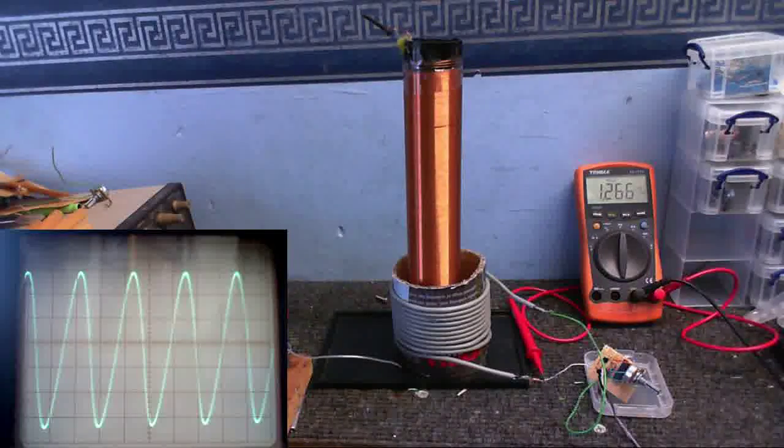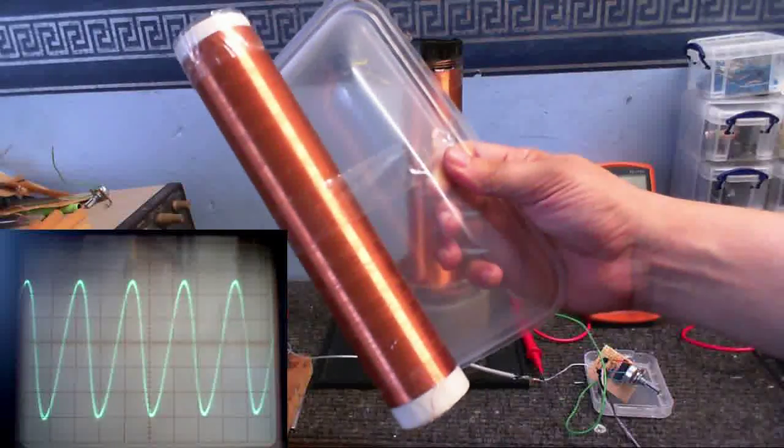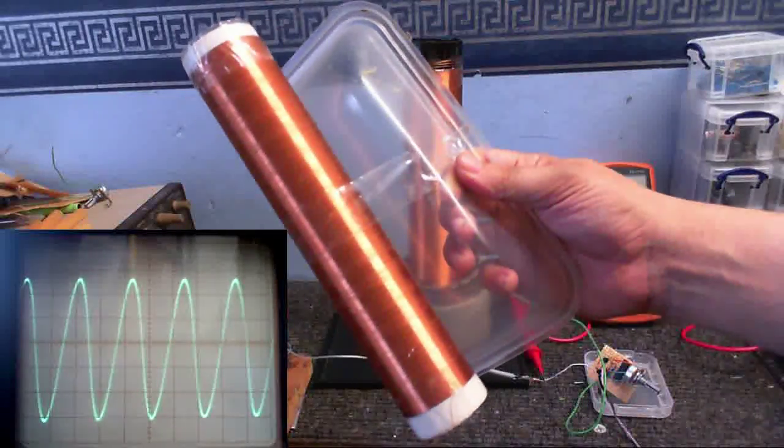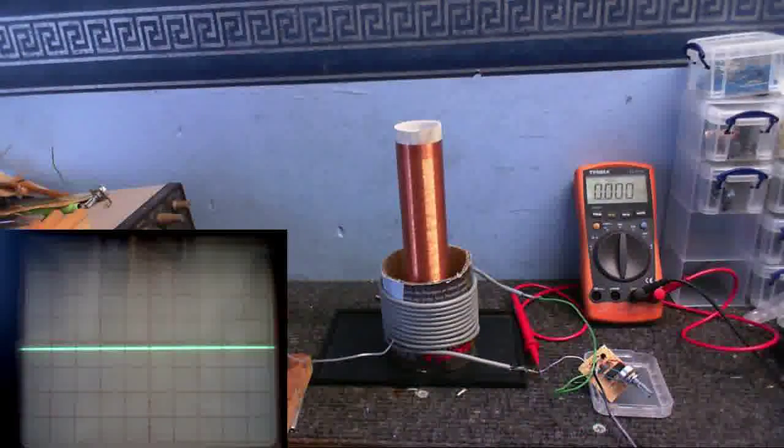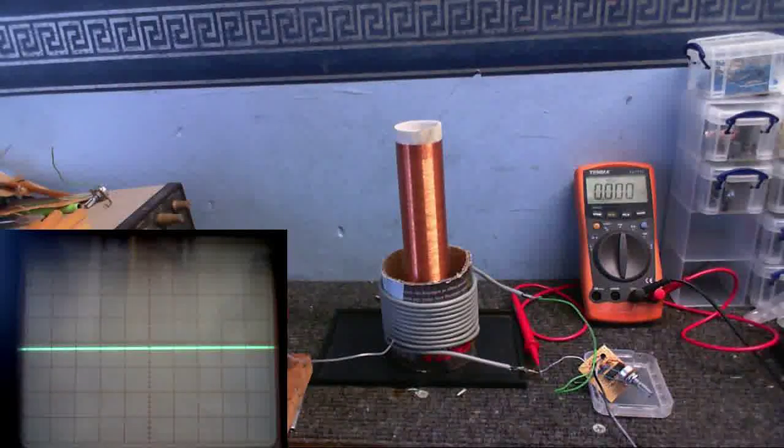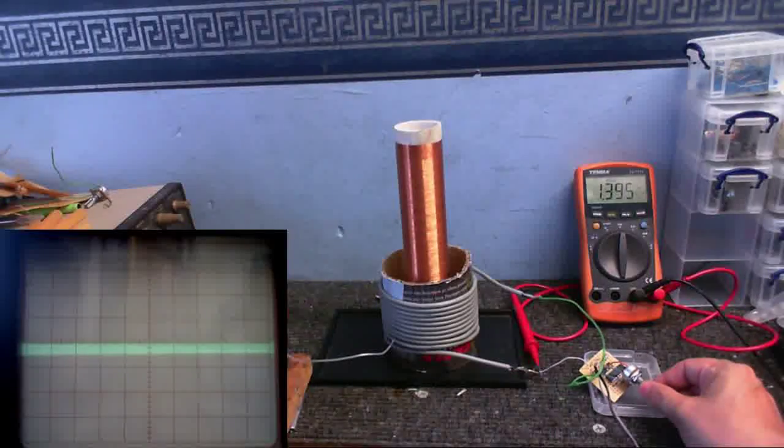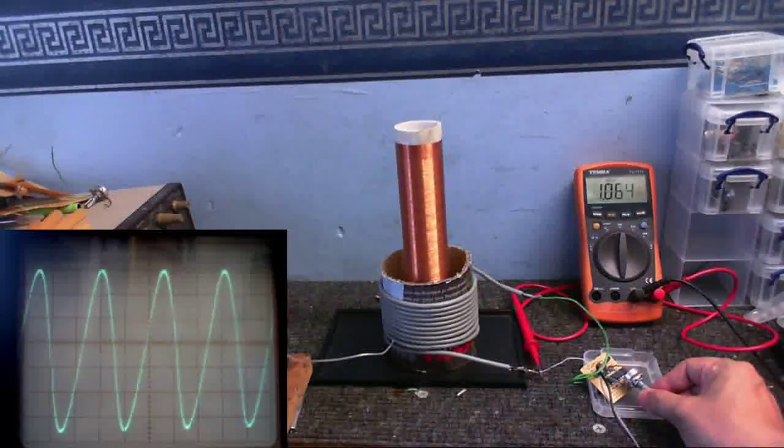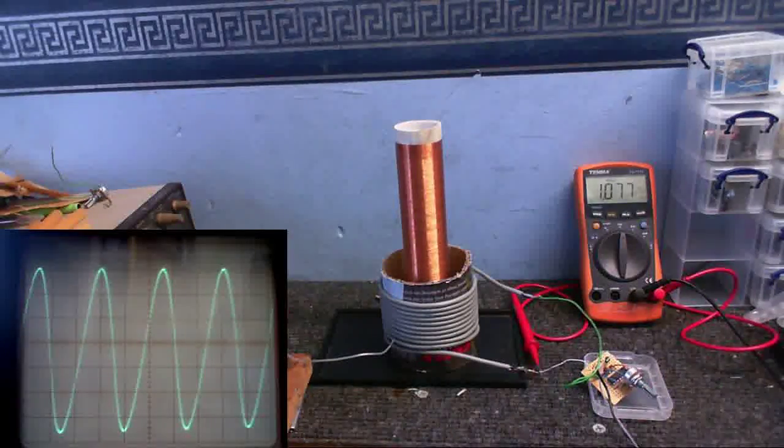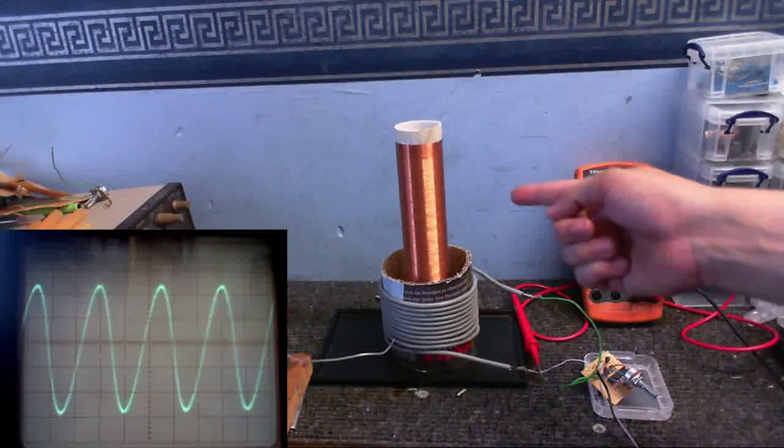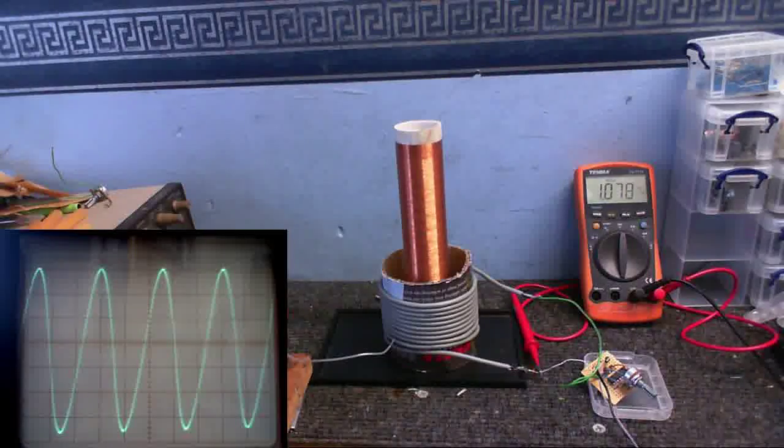So now we're going to test what I call the reservoir coil from the vacuum tube Tesla Coil project, just to see what the resonant frequency of this is. I've got no idea what we'll get with this one. So let's find out. Okay. Adjusting frequency. Oh, there we go. We've got 1.07 megahertz. So, so far all of these have been in the megahertz region. Although I'm working on another coil that should be in the kilohertz region.